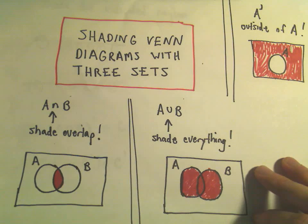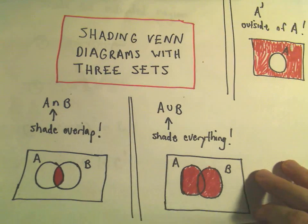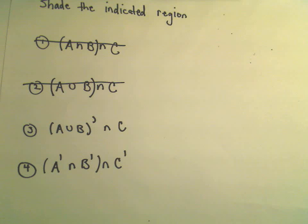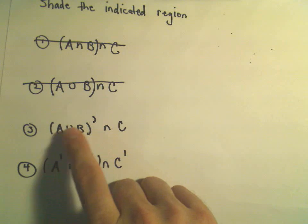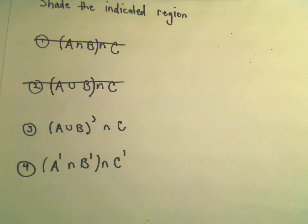Alright, so here I'm going to do my other two examples when shading Venn diagrams with three sets. And here we're going to do the complement of A or B and C. That'll be the first one we do.